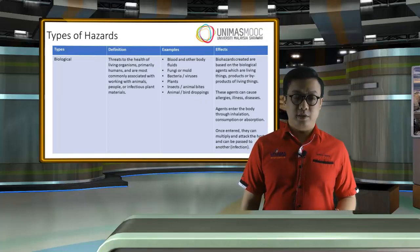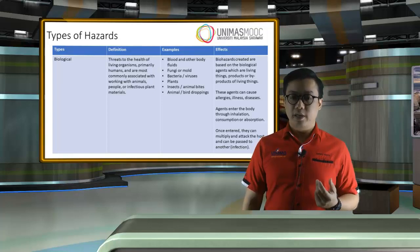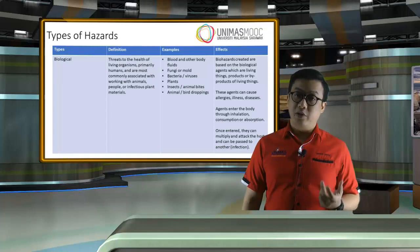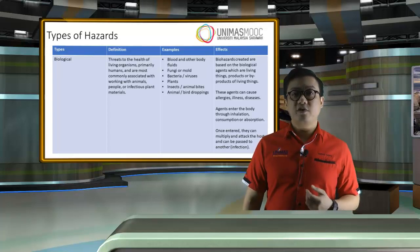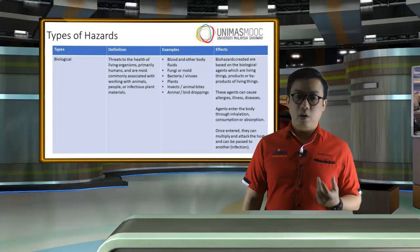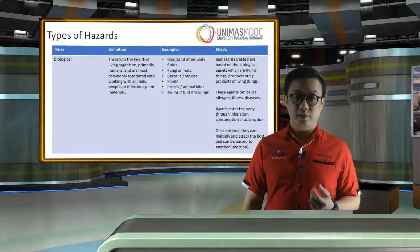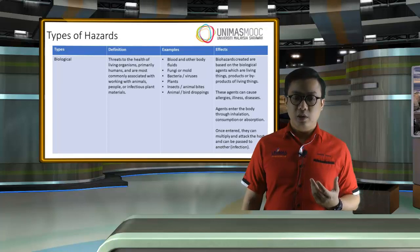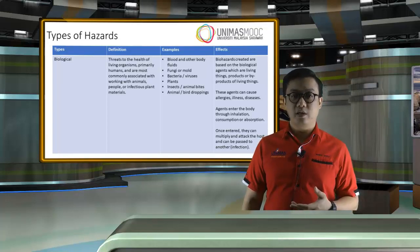Next, we have biological hazards, which is a threat to the health of living organisms, primarily humans, and are most commonly associated with working with animals, people, or infectious plant materials. Examples include blood and other body fluids, fungi or mold, bacteria or viruses, plants, insects, animal bites, and animal or bird droppings. The effects of biological hazards are based on biological agents — living things or products and byproducts of living things. These agents can cause allergies, illness, or diseases. Agents enter the body through inhalation, consumption, or absorption. Once entered, they can multiply and attack the host and can be passed to another via infection.